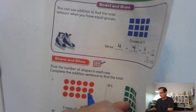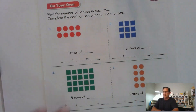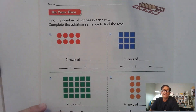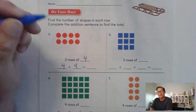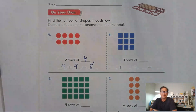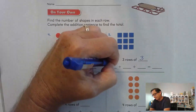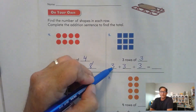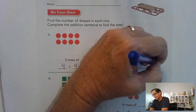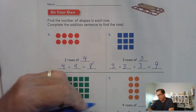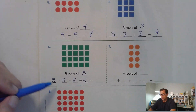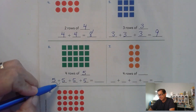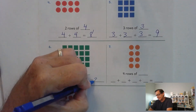Let's look at page 163. Find the number of shapes in each row and then complete the addition sentence to find the total. We have two rows and in each row there are four, so that's just the doubles fact of four plus four, which is eight. Here we have three rows of three — three, six, nine. Four rows of five — five and five is ten, five and five is ten, ten plus ten: twenty.